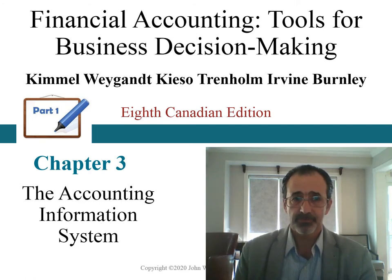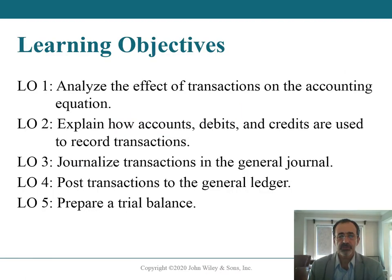So let's get started. Learning objectives. At the end of this chapter, you will be able to: one, analyze the effect of a transaction on the accounting equation; two, explain how accounts, debits, and credits are used to record transactions; three, journalize transactions in the general journal; four, post transactions to the general ledger; five, prepare a trial balance.